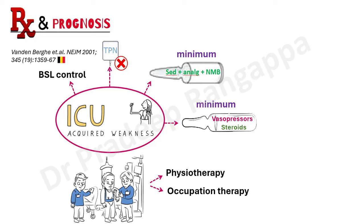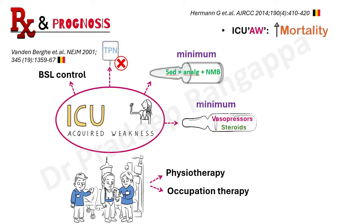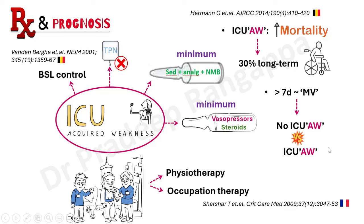Studies clearly show it is important to enhance recovery because the longer the patient has ICU-acquired weakness, the higher the mortality. ICU-acquired weakness increases mortality, and 30% of them will have long-term disability in terms of inability to recover to their normal activities of daily living. One French group study showed that in patients on mechanical ventilation for more than seven days, those who developed ICU-acquired weakness had double the mortality compared to those who did not. ICU-acquired weakness is an organ dysfunction with an important bearing on morbidity and mortality.